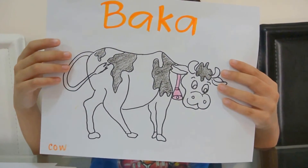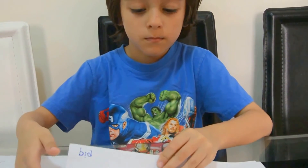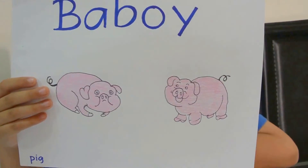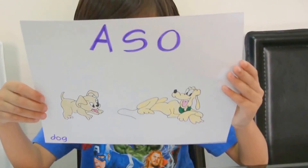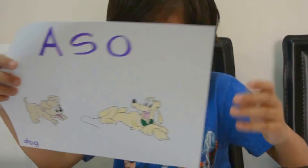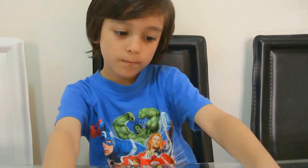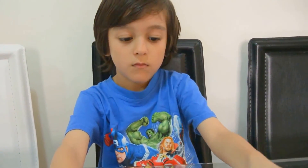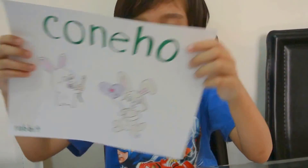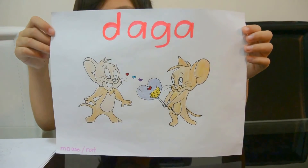Becker is cow. Bad boy is pig. Asshole is dog. Cusa is cat. Conejo is rabbit. Conejo is rabbit. And Daga is mouse or rat.